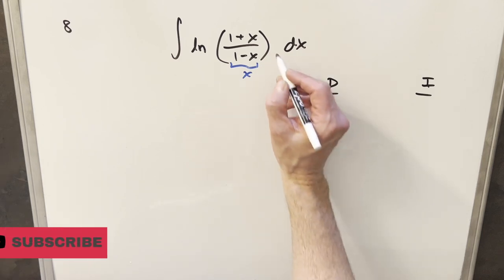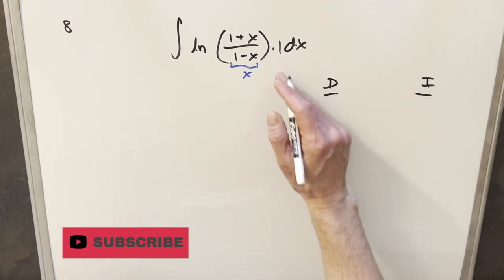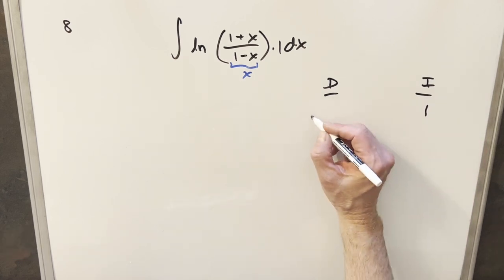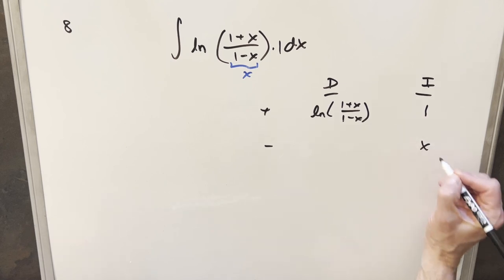We just have one function, so we can create a one here. So now we have two functions. Then I'll integrate the one and differentiate the natural log. From here, I can integrate one and we just get x here.